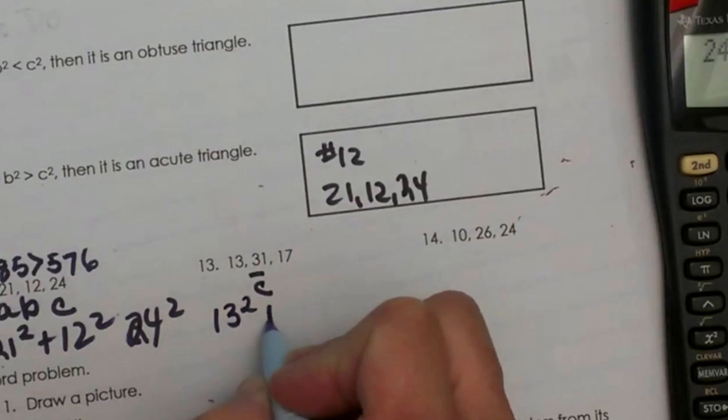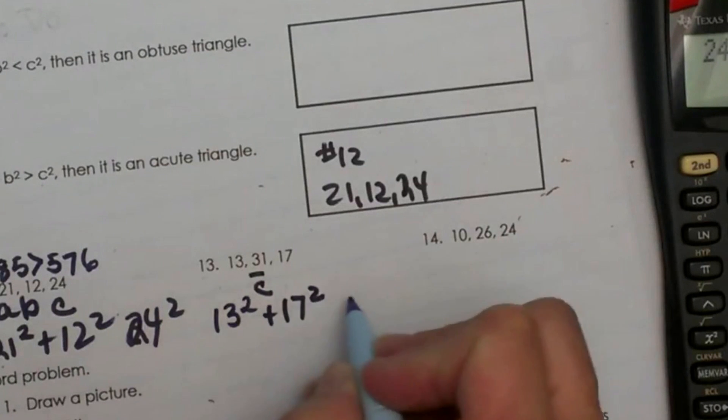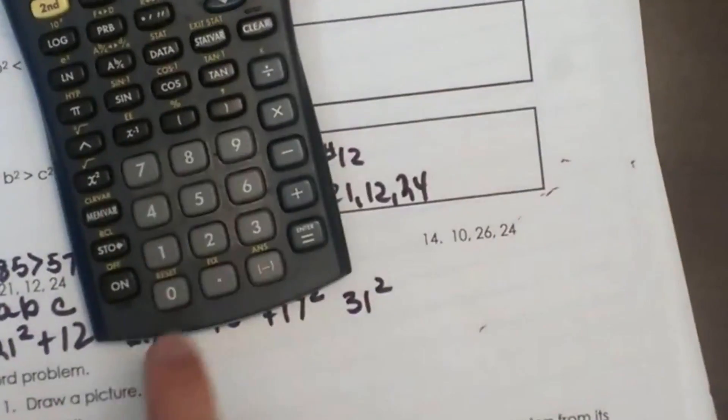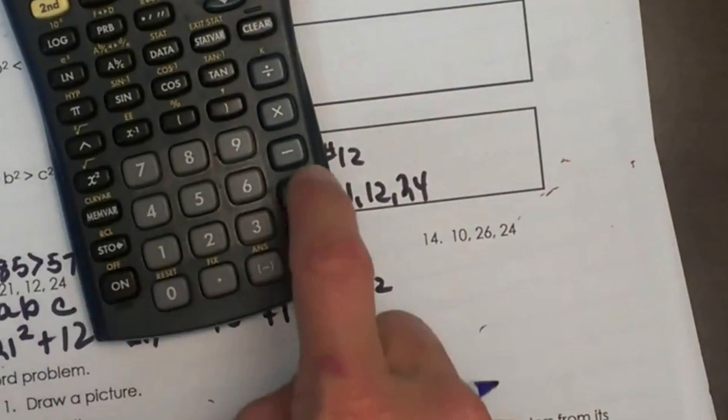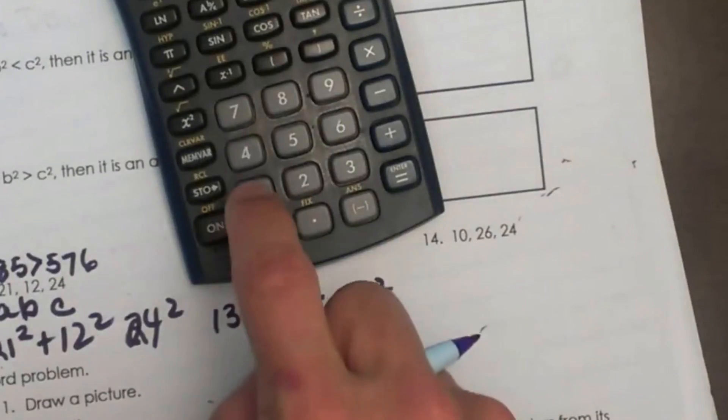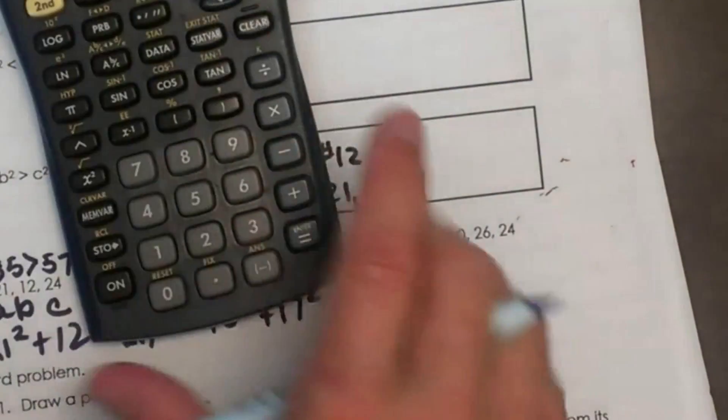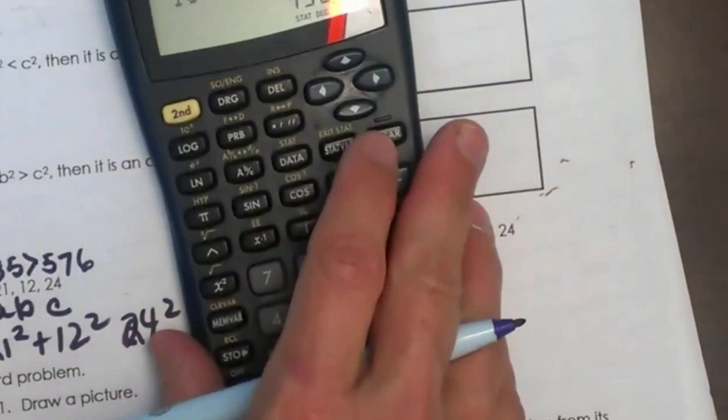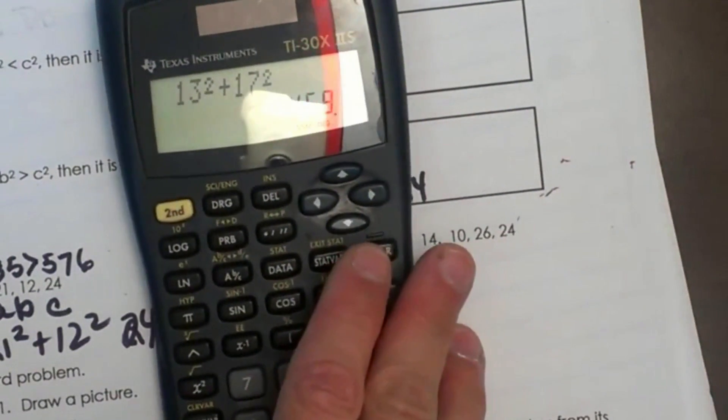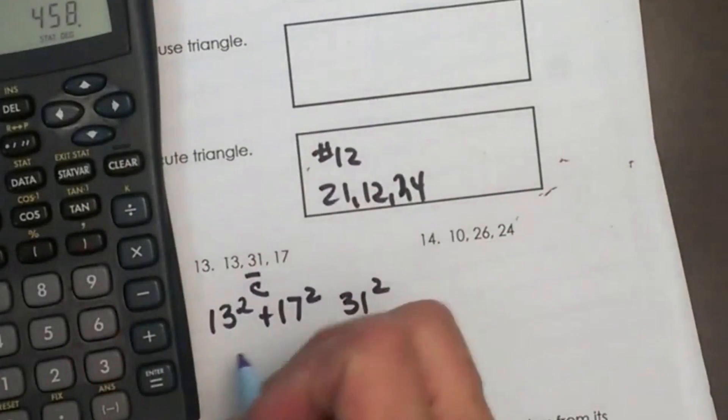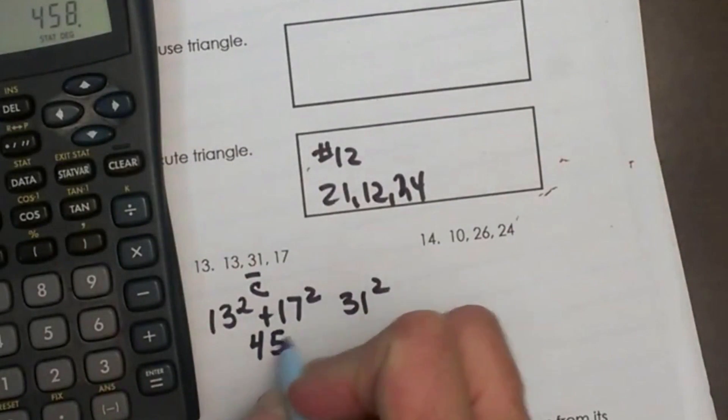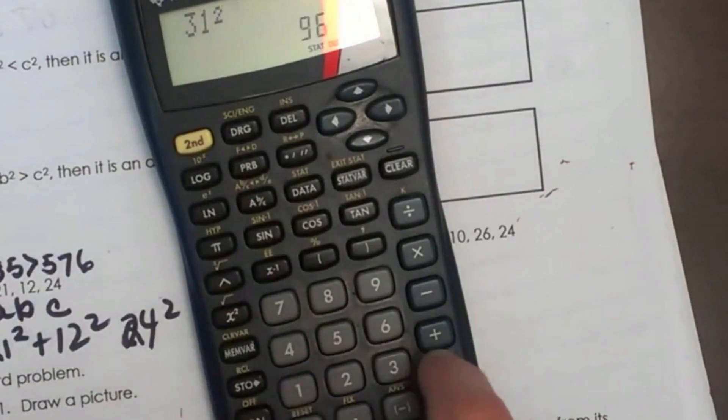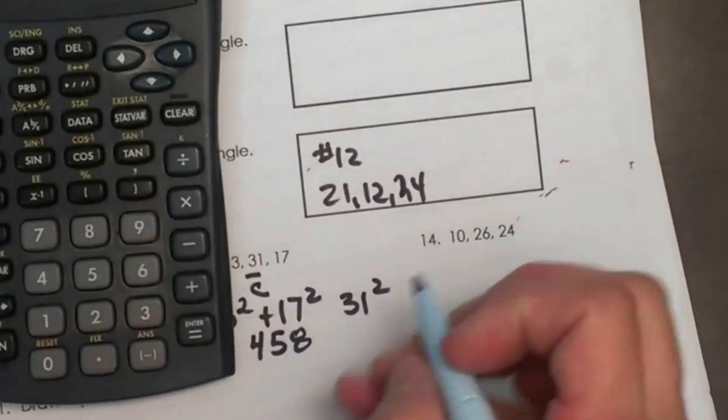So 13 squared plus 17 squared. How does that compare to 31 squared? So 13 squared plus 17 squared, and I get 458. So that is 458. And let's take 31 and square it. Oh, 961.